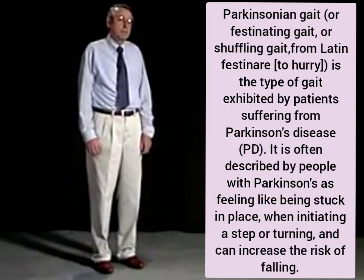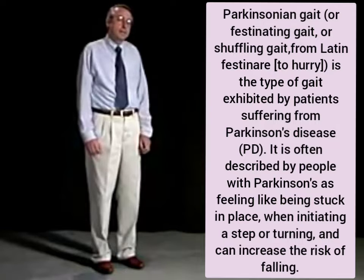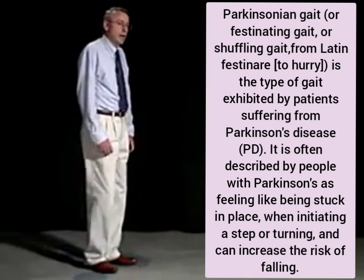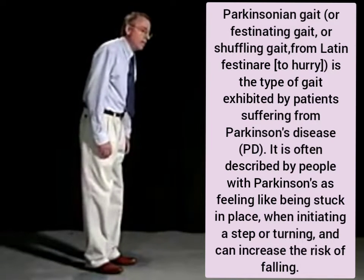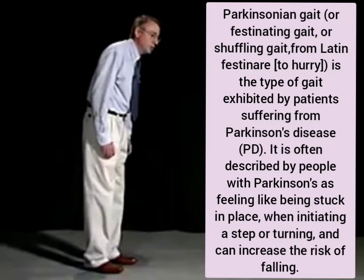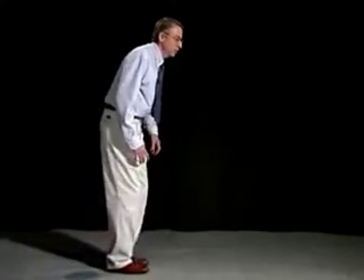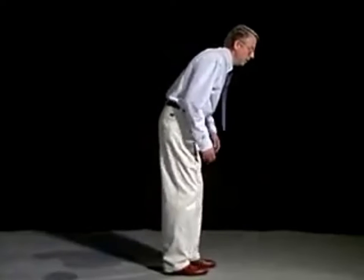This gait is a hypokinetic gait. The prototype is Parkinson's or Parkinsonian type of gait, in which the patient will have a stooped-over, forward posture and will have difficulty initiating gait. When the gait is initiated, there are small steps, and oftentimes there is a tremor associated with this. As the gait progresses, there may be a picking up of speed, or what is called a festinating gait.